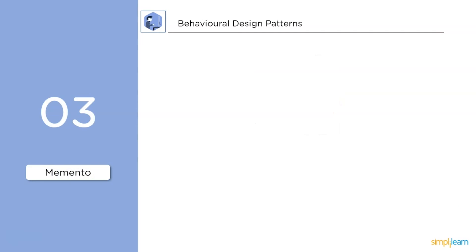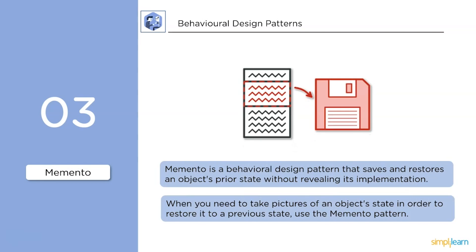Memento is a behavioral design pattern that saves and restores an object's prior state without revealing its implementation. We use the Memento pattern when you need to take snapshots of an object's state in order to restore it to a previous state.